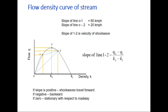The slope of line 1-2 will be (q₂ - q₁) / (k₂ - k₁), that is the flow at point 2 minus flow at point 1, divided by the difference in density at point 2 and point 1. This is the velocity of the shockwave. If this slope is positive, the shockwave will travel forward. If it is negative, it will go backward. And if it is zero, it will be stationary with respect to the roadway.